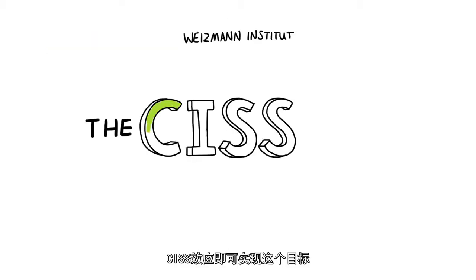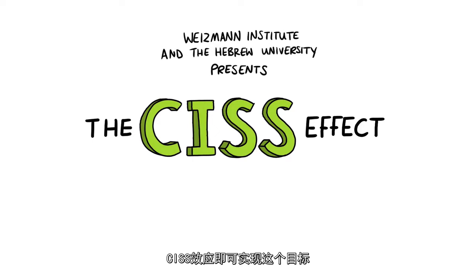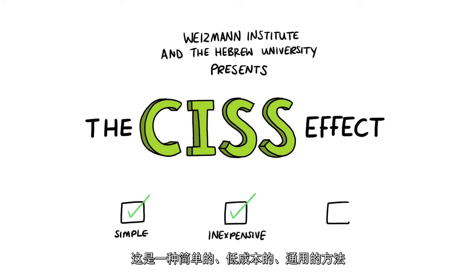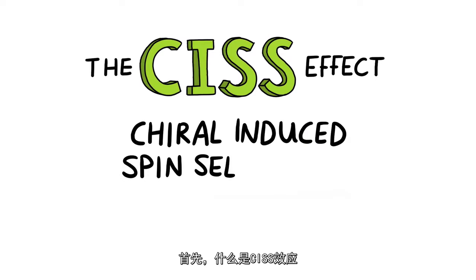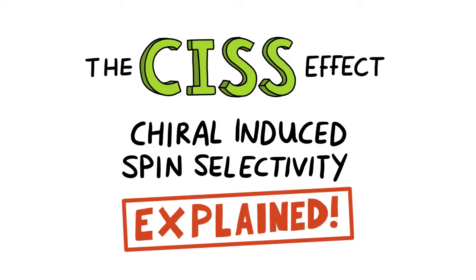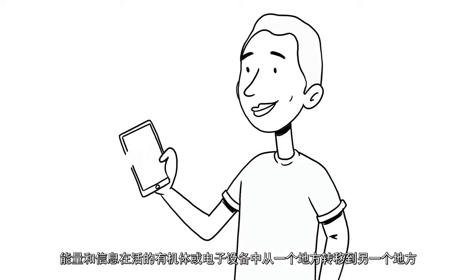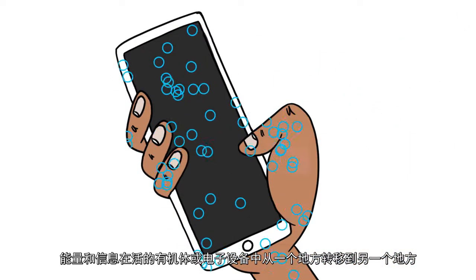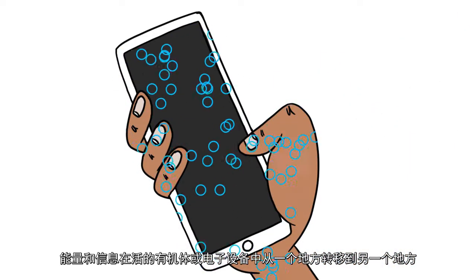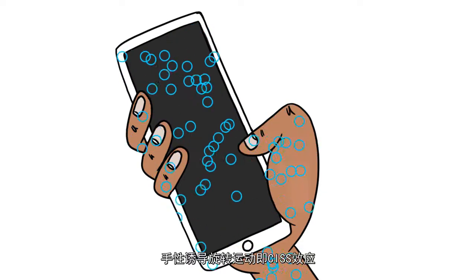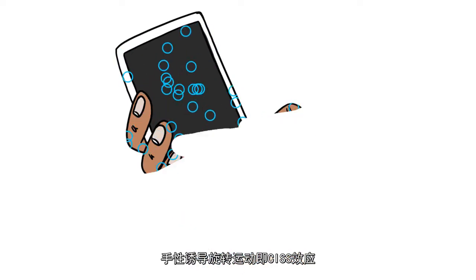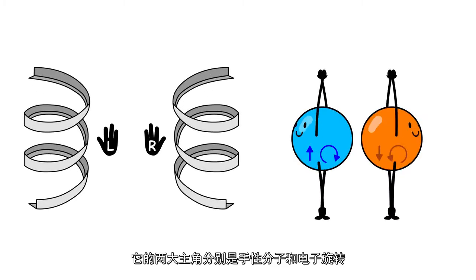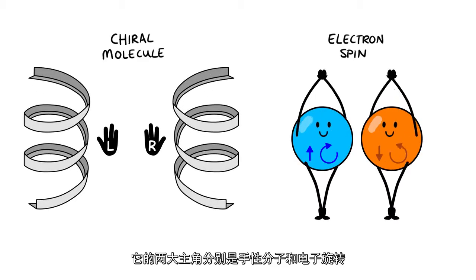But first, what is the SysEffect? Electron transfer is a process by which energy and information are transferred from one place to another in living organisms and electronic devices. The chiral-induced spin selectivity, or SysEffect, has two main actors: chiral molecules and electron spin.